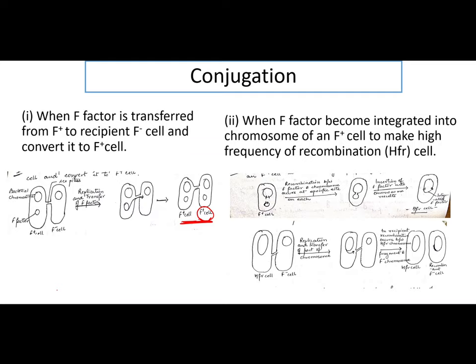For recombination, the second method is when the F factor becomes integrated into the bacterial chromosome. You have an F positive cell whose plasmid gets incorporated into your bacterial chromosome and it forms the HFR cell — High Frequency of Recombination cell. This HFR cell now has both your bacterial and plasmid DNA in one circular form. The HFR cell, because it contains the fertility factor, can still form the pilus with an F negative cell.